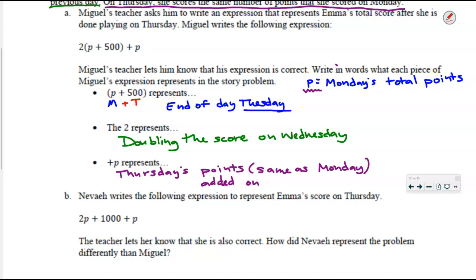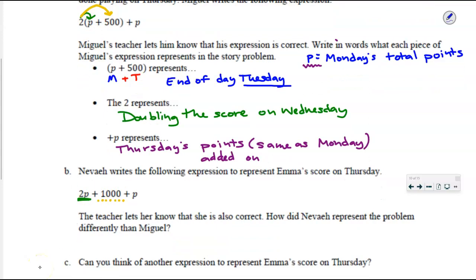Who would like to share? How did Nevaeh represent that differently? Ivan. Yeah, so here we can see p+500 has to be added together and then doubled. And she says, well, if I double this, isn't this the same as saying doubling p is going to be 2p and doubling 500 is going to be 1000. In other words, Nevaeh used the distributive property.